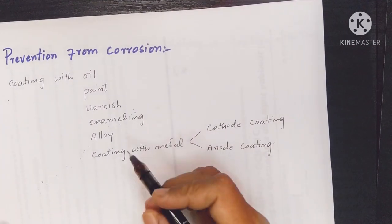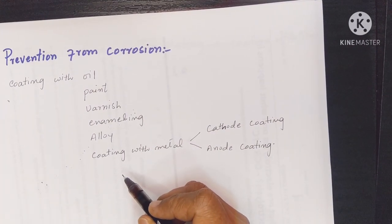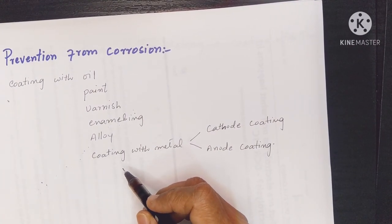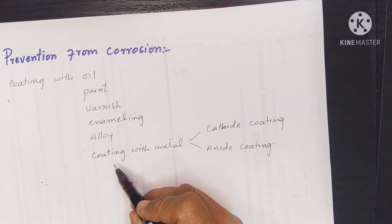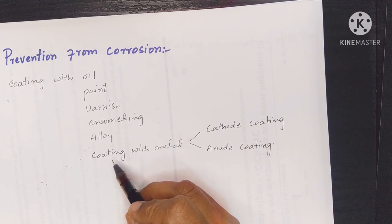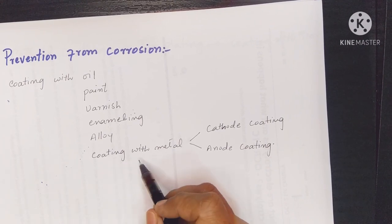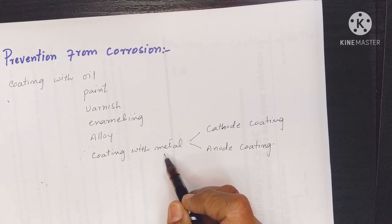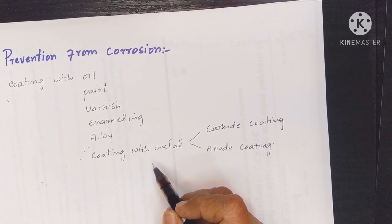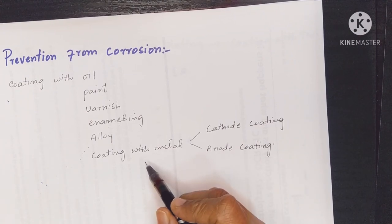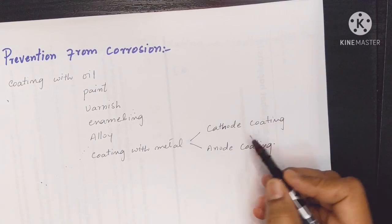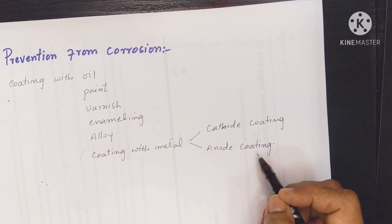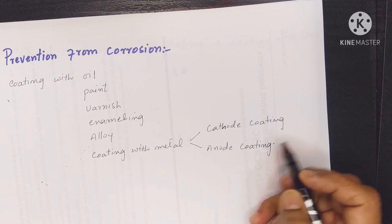The most important and effective method to save metal from corrosion is metal coating — coating one metal on top of another metal. We have two types of coatings: cathode coating and anode coating.